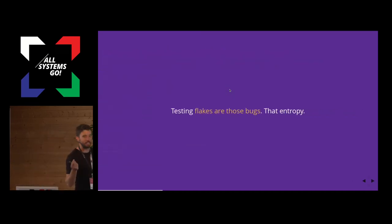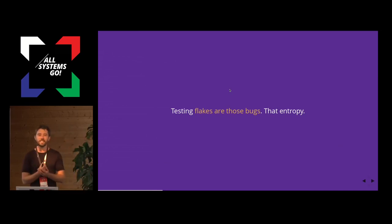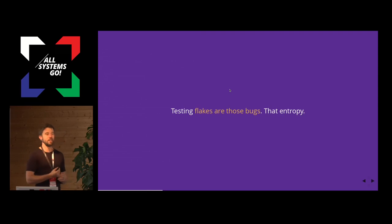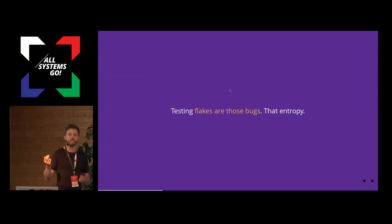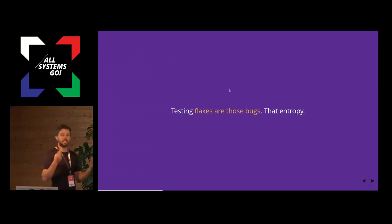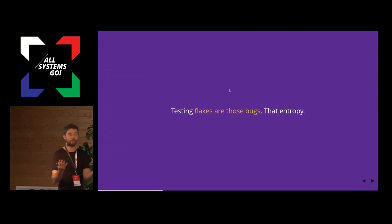So this is a claim I'd like to make and prove — this is very much in progress. The claim is that test flakes, the false positives, are by and large — with a margin of error — bugs. False positives, test flakes are bugs. They are the entropy in your software, the latent bugs that are hidden, causing these false positives to happen. All these annoying flakes that plague your project when you test aggressively are really the tests finding those problems and being helpful — and they're being, by and large, ignored by most projects. So we can turn that around.